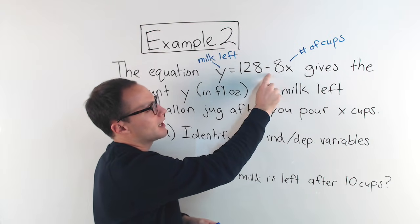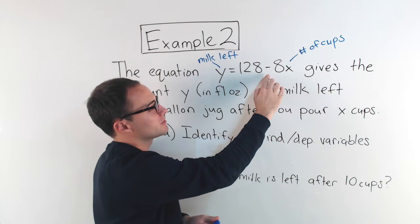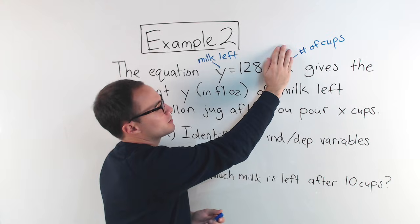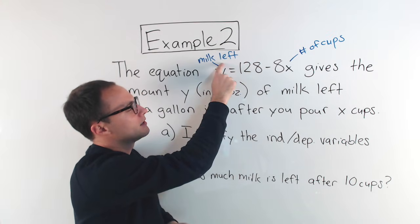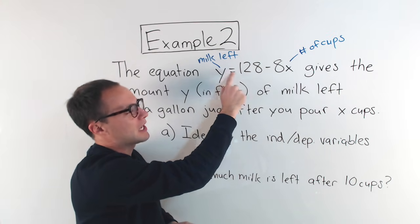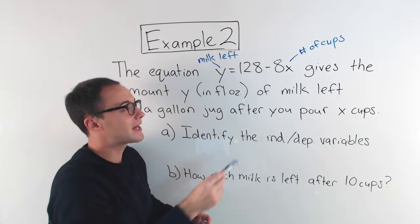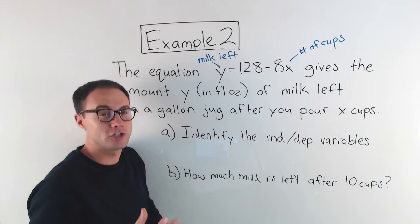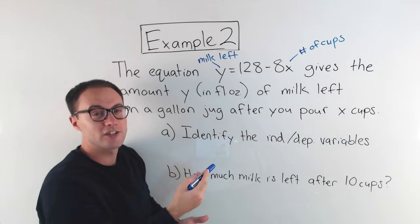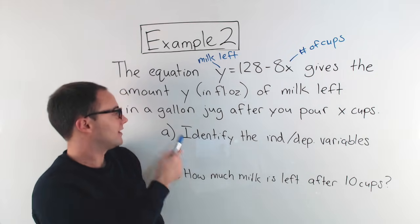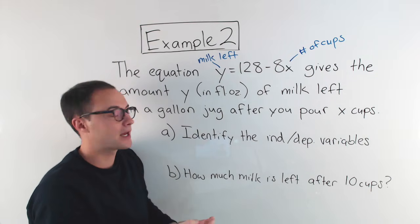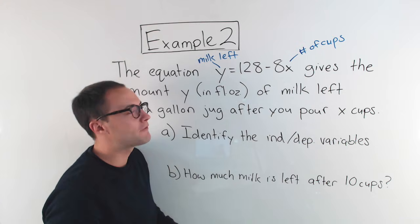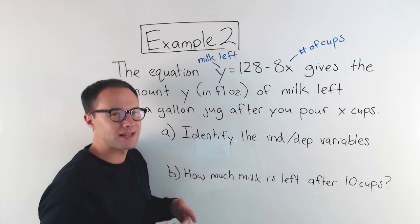Where does that 128 come from? We're starting with that. We're subtracting out how many cups. So if you think, what if I didn't pour any cups of milk out? If that was 0, 8 times 0 is just 0, so we're subtracting 0, that basically goes away and we have 128. So the milk left is 128 fluid ounces. That 128 represents how much is in the jug, in a full jug. So 128 fluid ounces in one gallon jug. That's where those numbers come from. Sometimes it helps to know that.